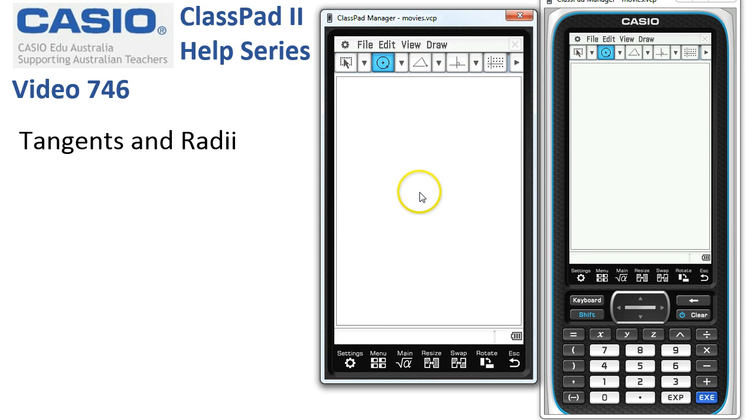We'll choose the circle tool. We'll tap once for the center, once for the circumference. That'll do nicely.